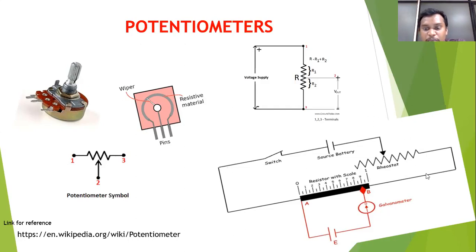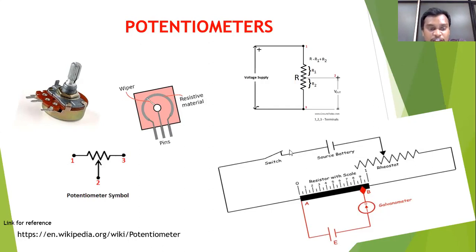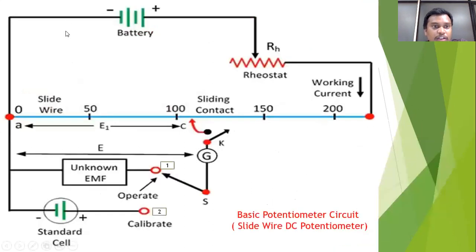In electrical measurements, it is a known thing, but we don't know how this potentiometer is useful in electrical measurements. This is the general circuit diagram of a potentiometer — I will explain in this video. This basic potentiometer circuit is also called the slide wire DC potentiometer circuit. If asked in an exam, we have to draw this circuit diagram and explain the construction and operation.